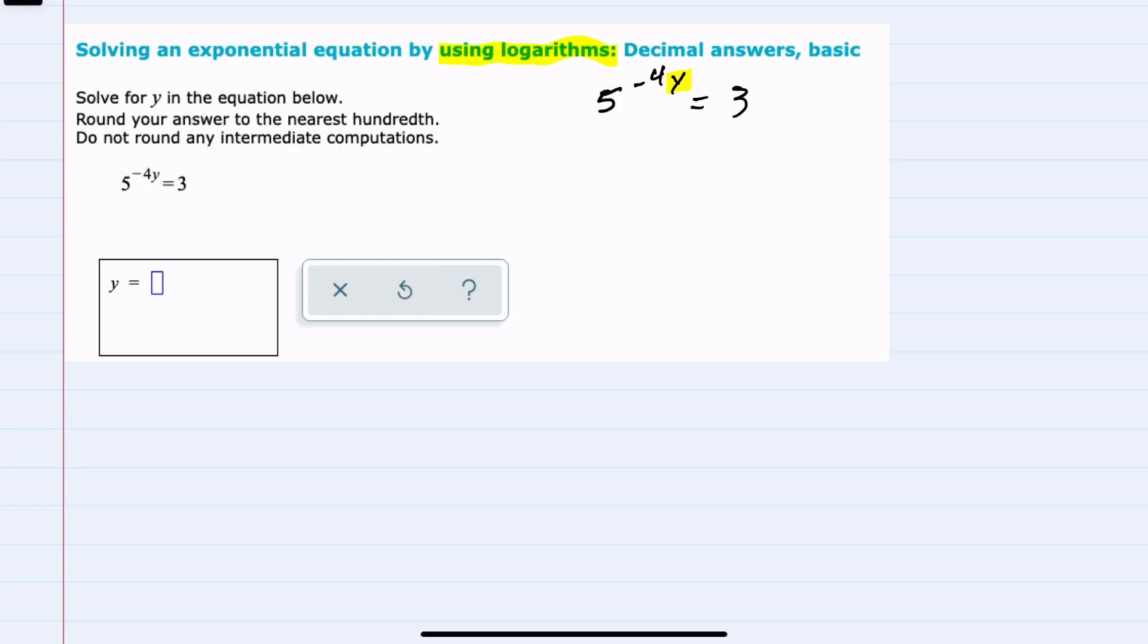So logarithms are going to help us get that variable out of the exponent. And since we have two sides of the equation here, we can take the log of each side and then use the properties of logarithms to bring that exponent down as a coefficient in front of the logarithm.